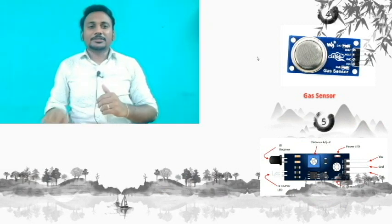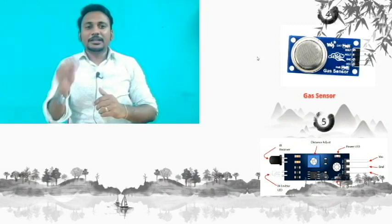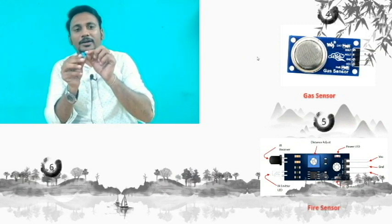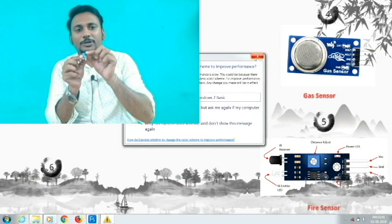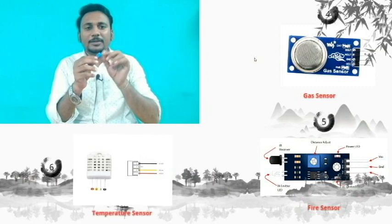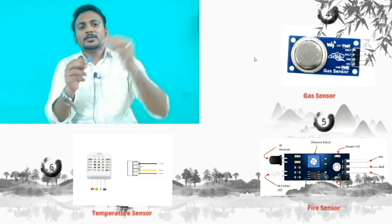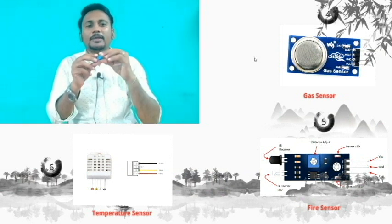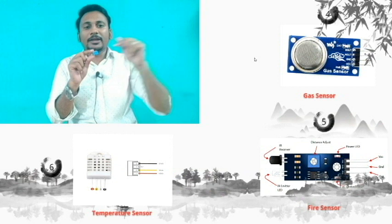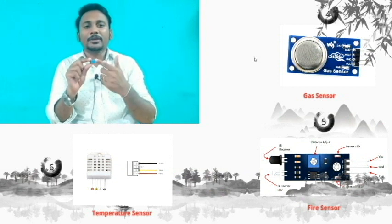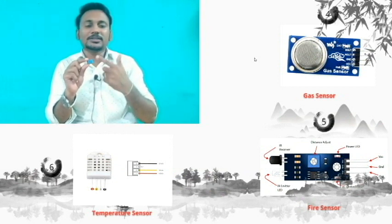The next sensor is the temperature sensor. In the temperature sensor, I am going to find the room temperature. I am going to place the sensor in my room. If the temperature rises, I will be able to set the AC level automatically. That can be done with the help of this sensor.